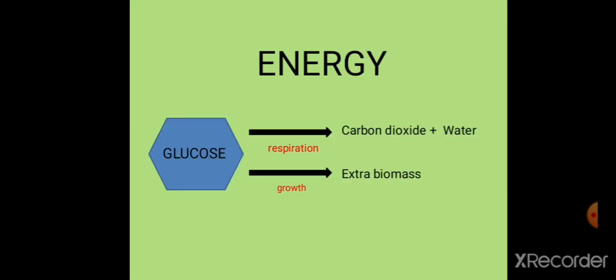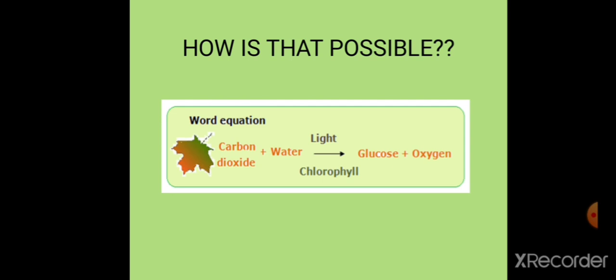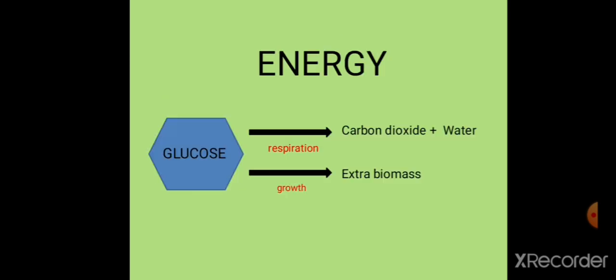This glucose molecule is a source of energy. The glucose molecule contains stored energy, but the cells can only release energy from glucose by another process — that process is called respiration. Photosynthesis and respiration are complete reverses of each other. In the reaction for respiration, you write glucose plus oxygen, giving you carbon dioxide and water. This glucose molecule is broken down and energy is released.